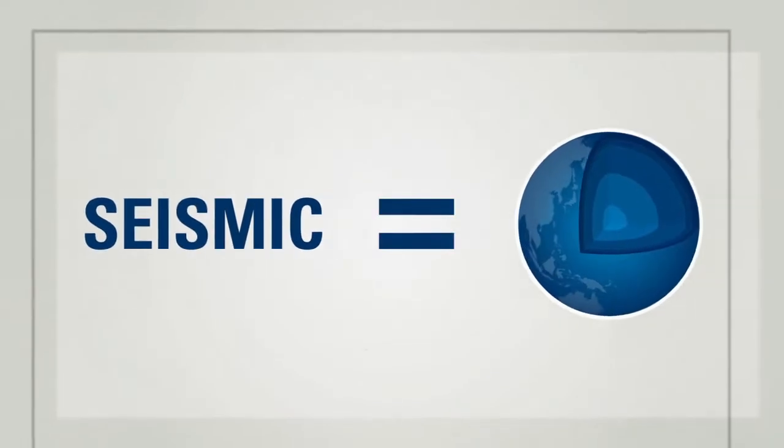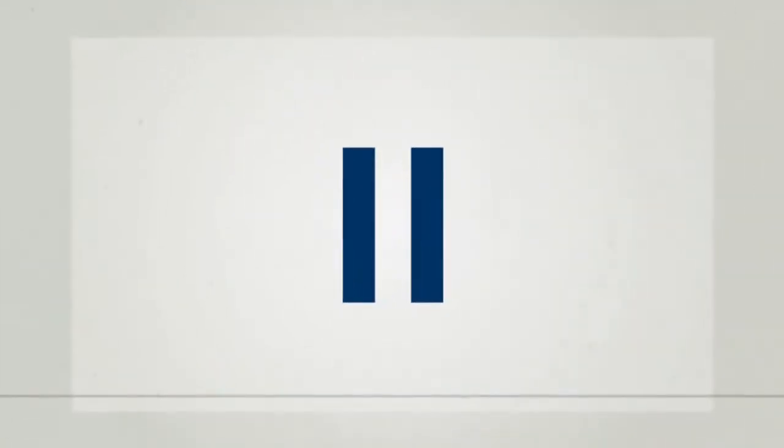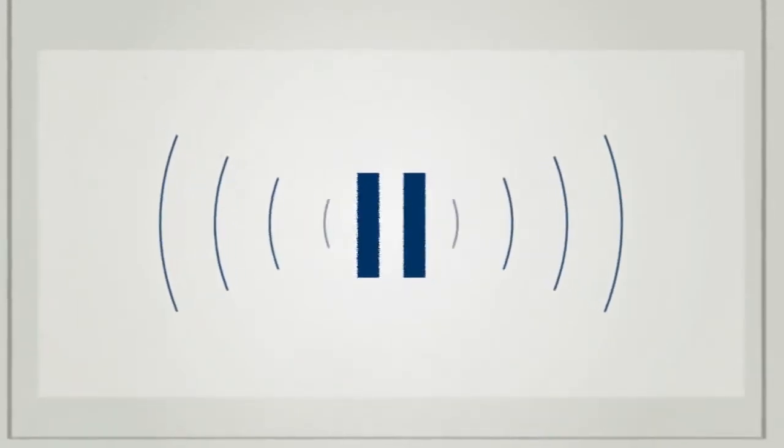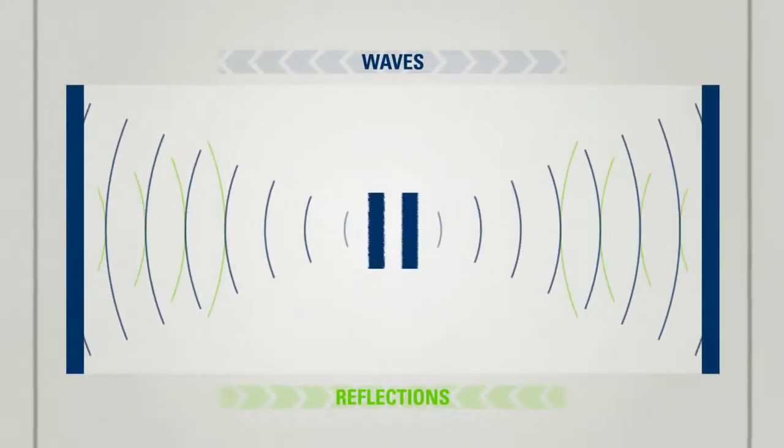Seismic reflection is a method of exploring the Earth's crust using artificially generated waves. When we speak, our vocal cords produce vibrations that ripple through the air. When these vibrations meet resistance, they are reflected back as an echo.